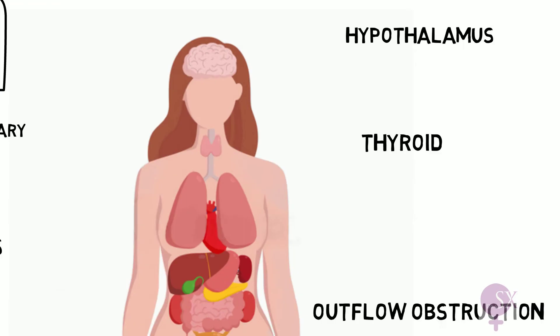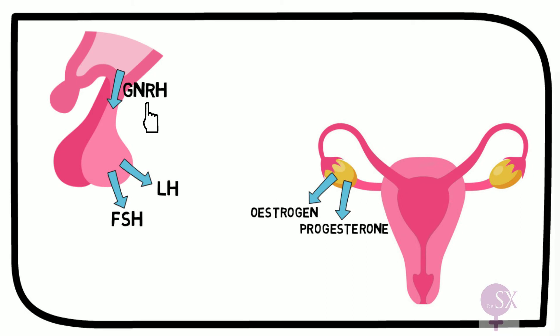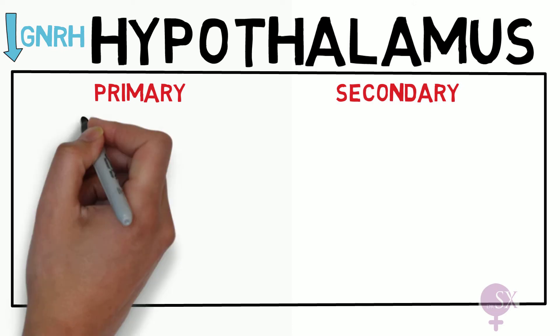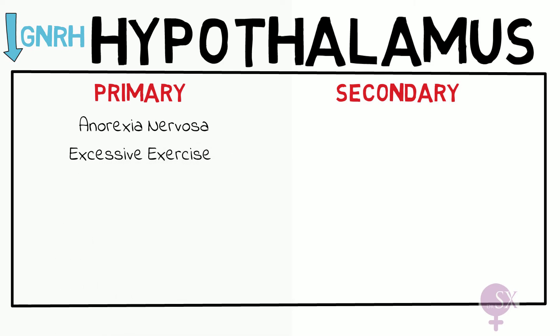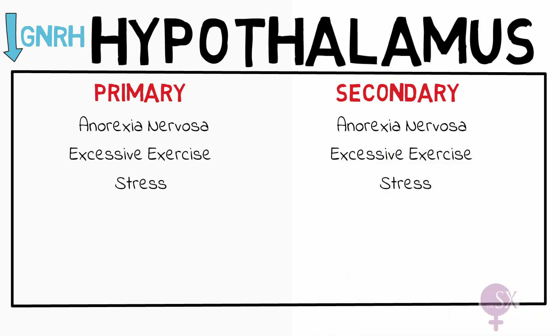Starting with the hypothalamic causes, and here I'm dividing the causes into those that cause primary amenorrhea and those that cause secondary amenorrhea. The hypothalamus is involved in secreting GnRH in our HPO axis, so all the hypothalamic causes are disrupting GnRH production. Anorexia nervosa, excessive exercise, and stress can cause both primary and secondary amenorrhea because they result in hypothalamic hypogonadism, therefore low GnRH levels.